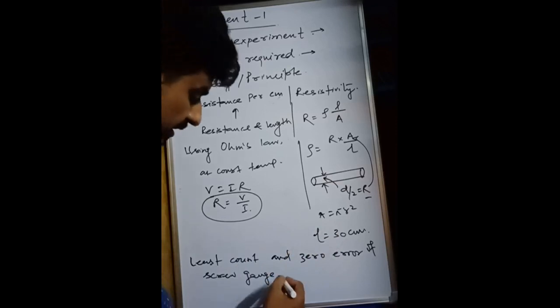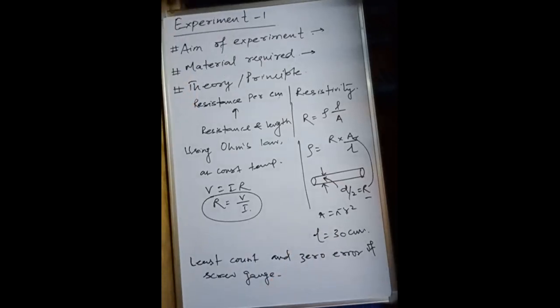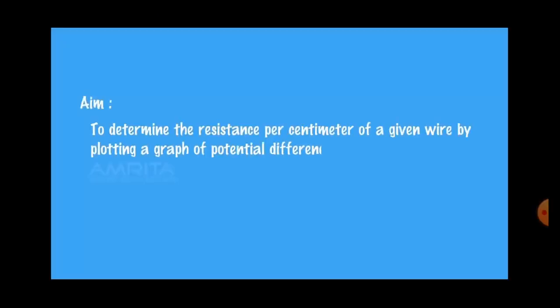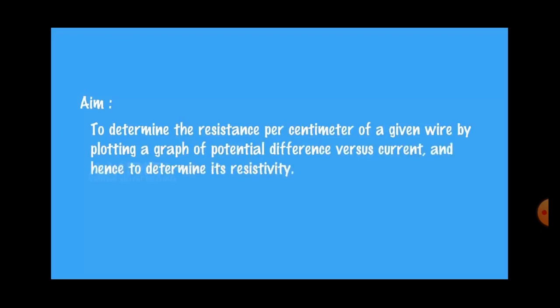Aim of experiment: to determine the resistance per centimeter of a given wire by plotting a graph of potential difference versus current, and hence to determine its resistivity.